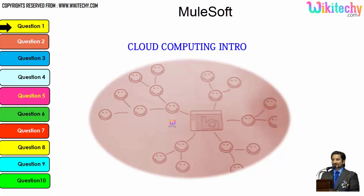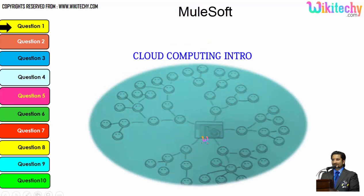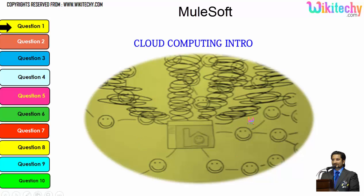Let's talk about the cloud computing intro. This is a computer connected to a server, and the server is monitoring this computer. Once the network becomes bigger, the monitoring becomes tougher for that server. As more computers are added, the network grows larger, the monitoring system becomes really slow, and there is a possibility that the network crashes or the server couldn't monitor specific networks.